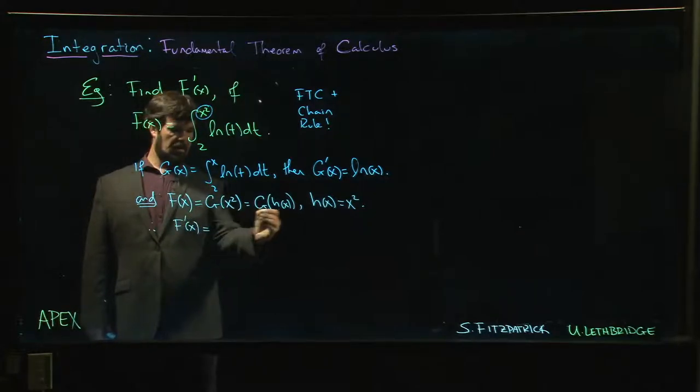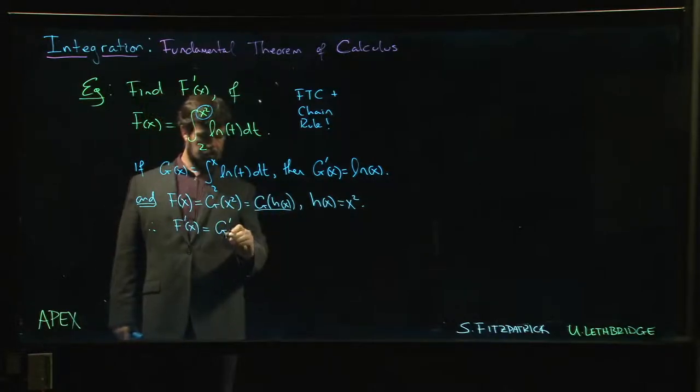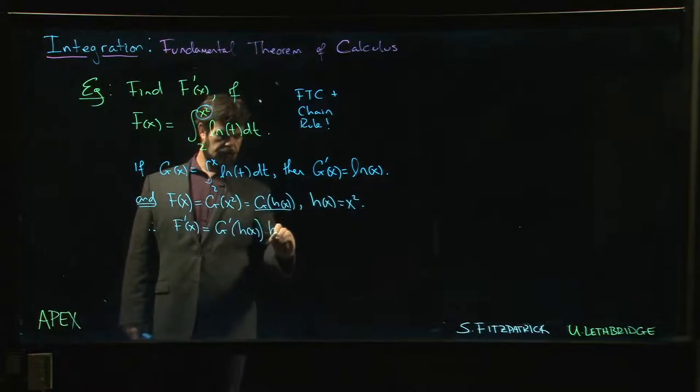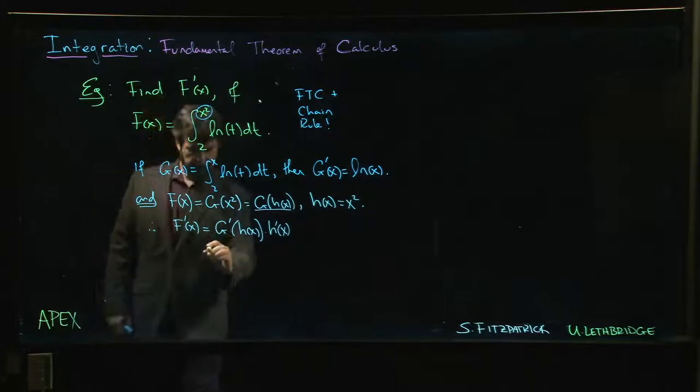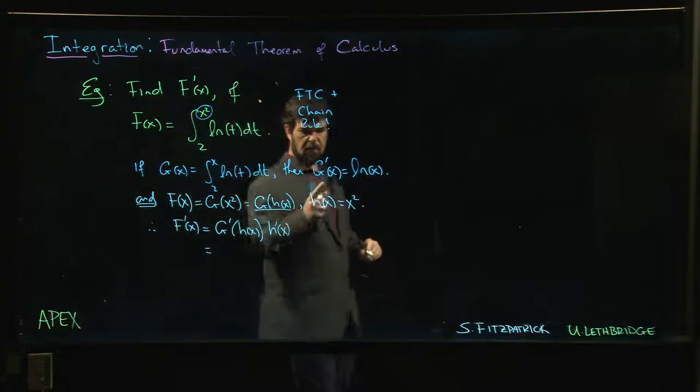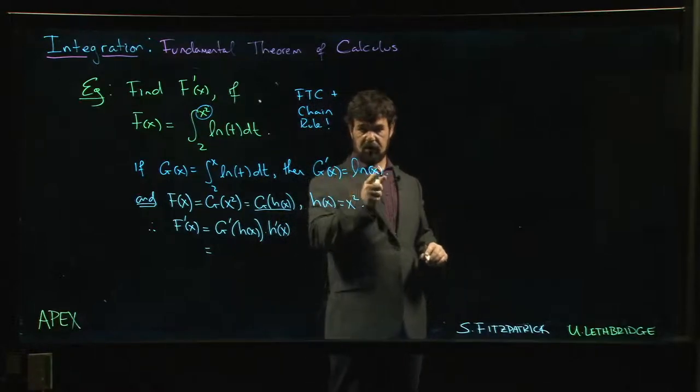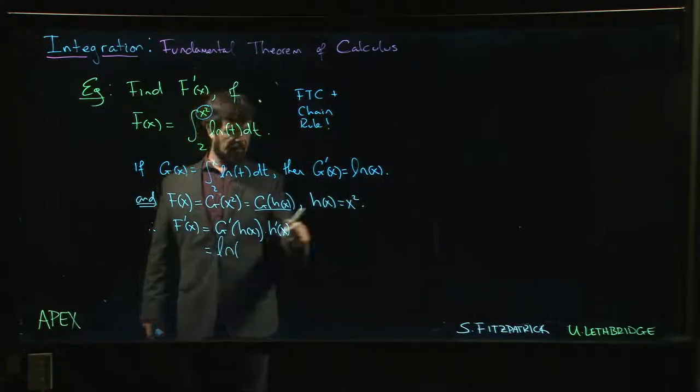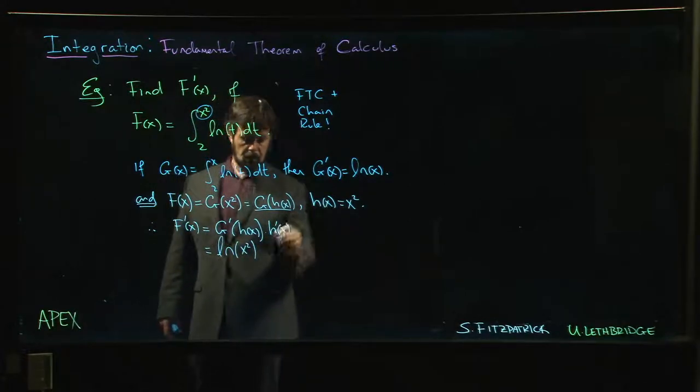F prime of x is G prime of H of x times H prime of x. G prime of H of x is just the natural log of H of x, and H of x is x squared. H prime—well, we know what H prime is—the derivative of x squared is 2x.